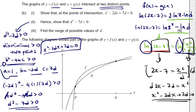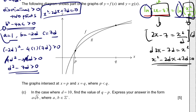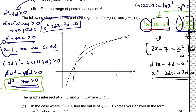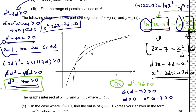Question b(iii): we need to find the range of possible values of d. Using d² - 7d > 0, we factor out d to get d(d - 7) > 0. This means d > 0 or d - 7 > 0, i.e., d > 7. Since d is always a positive real number, the correct answer is d > 7.